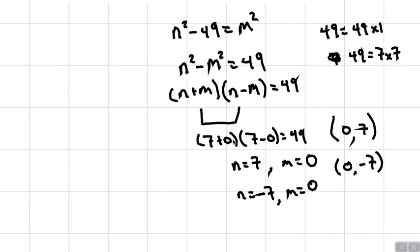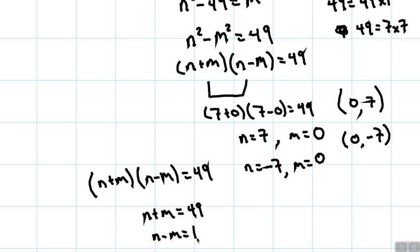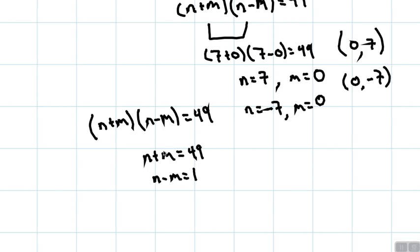Next, in this case of 49 times 1, let's look at that. So we'll say that n plus m is equal to 49 and let's say that n minus m is equal to 1. If we add this equation to that equation, we get 2n is equal to 50 and therefore n is equal to 25.